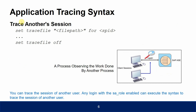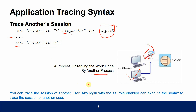To trace another session, use 'set trace file <file path> for server process ID <SPID>', and once done, use 'set trace file <file path> off'. From another client you pass the server process ID of the session you want to trace, so one process can observe the work done by another. Any login with SA role enabled can execute this syntax.